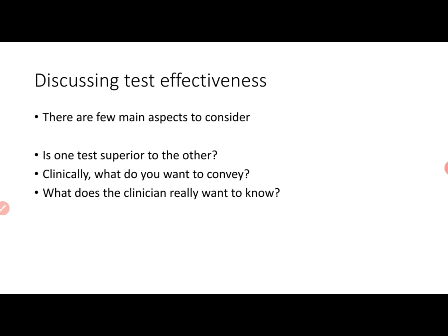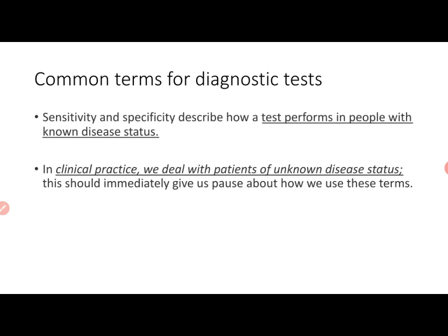Clinically, what is it you want to convey to the referring physician? And more importantly, what is it that the clinician really wants to know? There are certain terms commonly used when we describe test effectiveness. These include sensitivity, specificity, predictive values, diagnostic odds ratios, likelihood ratios, and post-test probabilities.